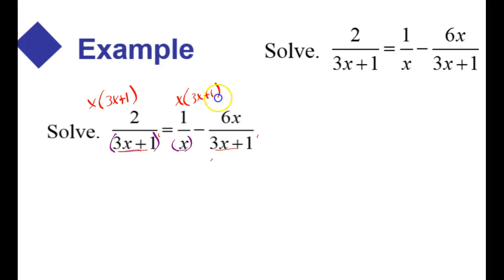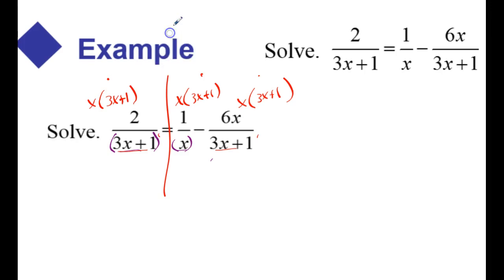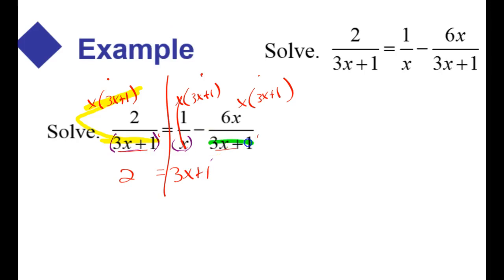I'm going to write this on every term. It looks like I've multiplied the right side twice and this side only once, but I didn't — I multiplied both sides by the common denominator and distributed to every term. Let's see if we can cancel all of this, leaving me with just a 2 on this side. The x's cancel here, bringing down a 3x plus 1. Over here, only the 3x plus 1 will cancel with the 3x plus 1. So I've got an x and a 6x left for a total of 6x squared.